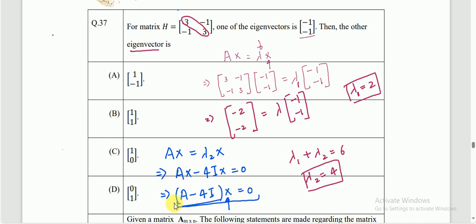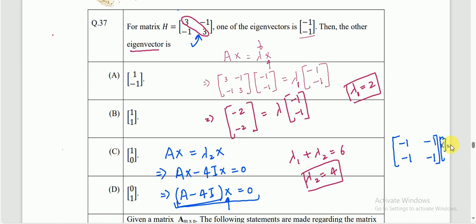Let's compute A - 4I by subtracting 4 from the diagonal elements of matrix H. This gives diagonal entries 3 - 4 = -1 and 3 - 4 = -1, with off-diagonal elements unchanged. Setting (A - 4I)X = 0 and solving for the null space, we choose X = [1, -1], which satisfies the equation. So the other eigenvector is [1, -1].